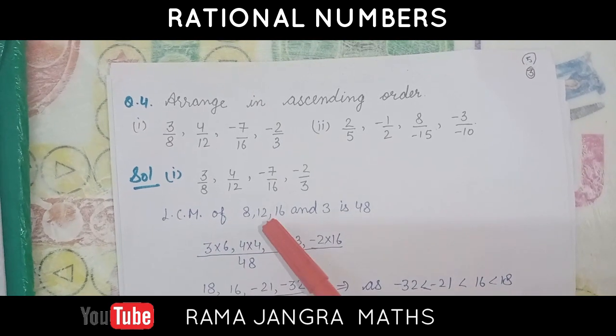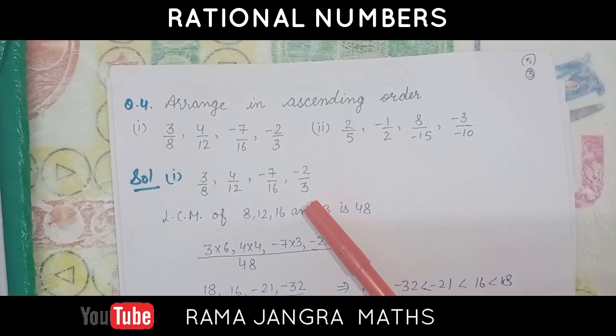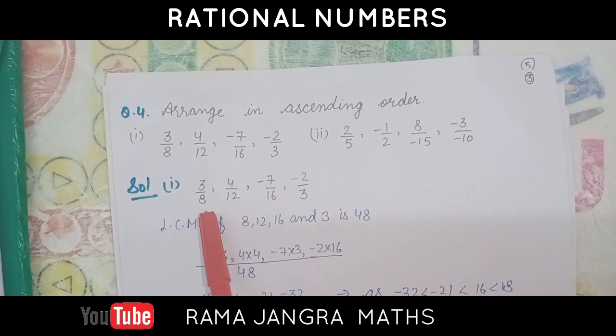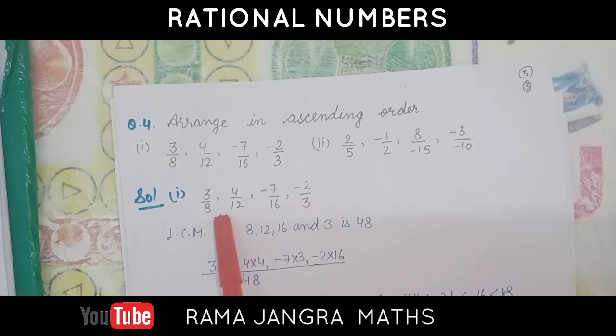Firstly, smaller, then bigger, then bigger, then bigger, like in this way. So, we have to take the LCM of the denominators.